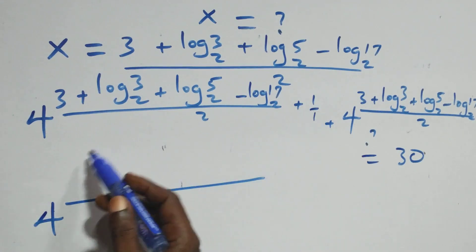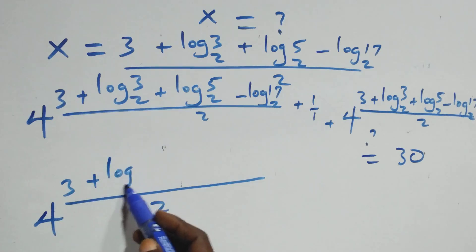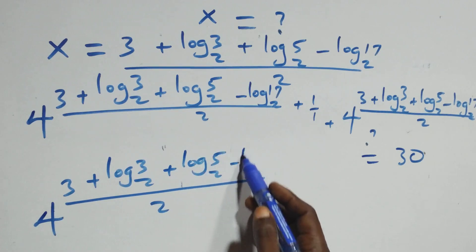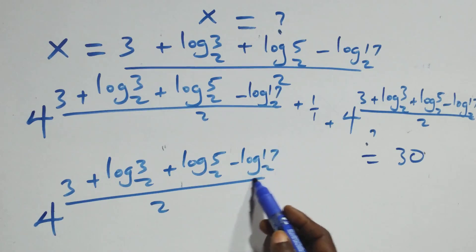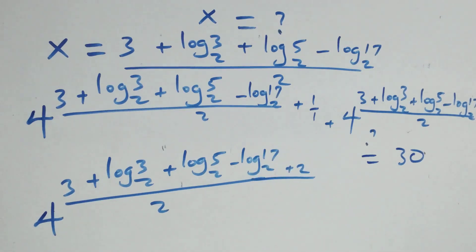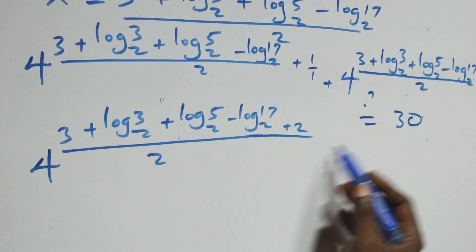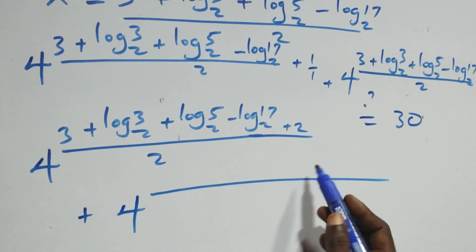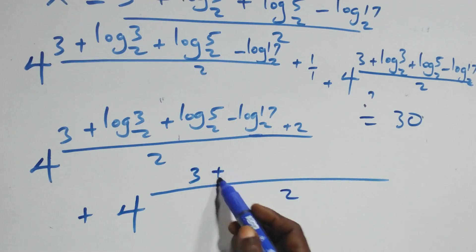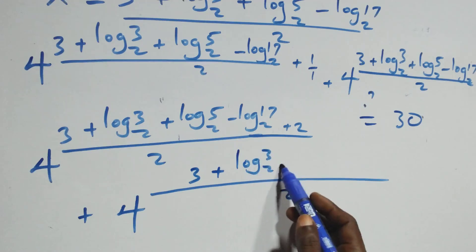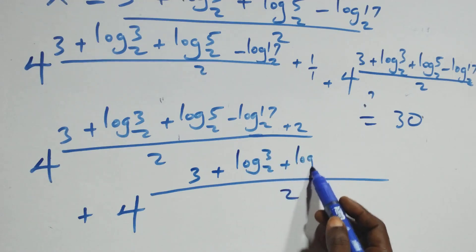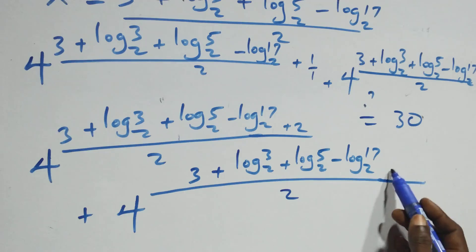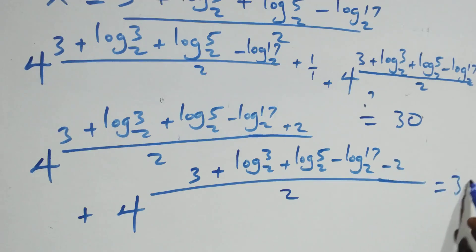Combining the exponents as single fractions: the first term becomes 4^((3 + log₂3 + log₂5 − log₂17 + 2)/2) and the second becomes 4^((3 + log₂3 + log₂5 − log₂17 − 2)/2), equals 30.